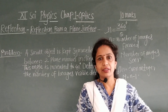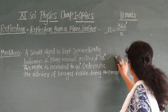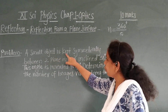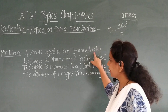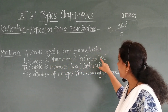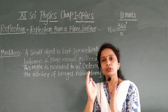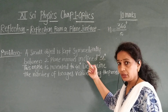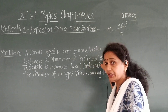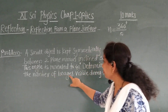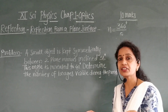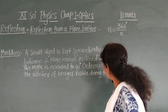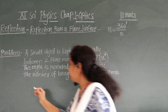Let us calculate one example related to this formula. A small object is kept symmetrically between two plane mirrors inclined at 38°. The angle is then increased to 41°. Determine the number of images visible during the process — for angle 38° and for angle 41°.